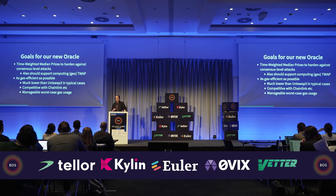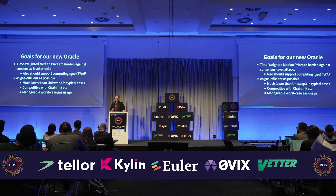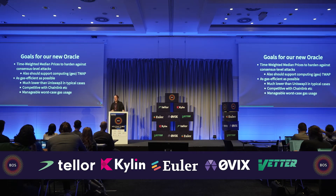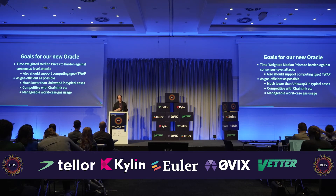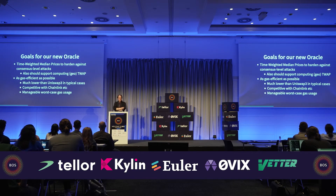Since we're building this Oracle from scratch, we want to improve on Uniswap 3 in as many ways as possible. First, we want a contract to be able to get the time-weighted median price of an asset, because it's believed to be more secure against attacks in proof of stake. However, there are cases where you'd still want a TWAP, so we also support computing the TWAP. We support the geometric TWAP, not the arithmetic mean of Uniswap 2. And finally, we want our gas efficiency to be as good as possible.